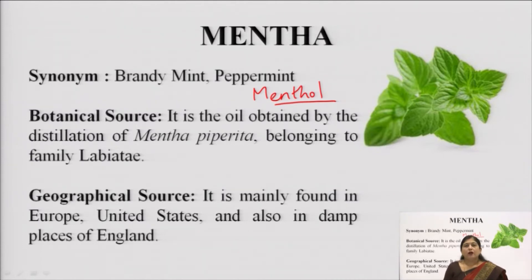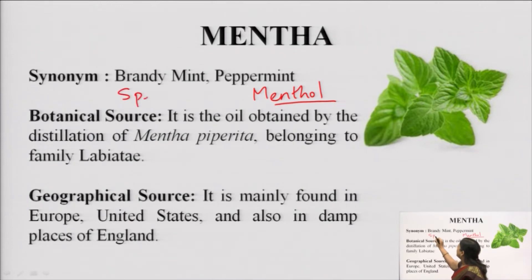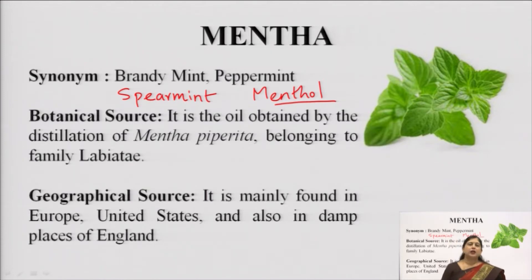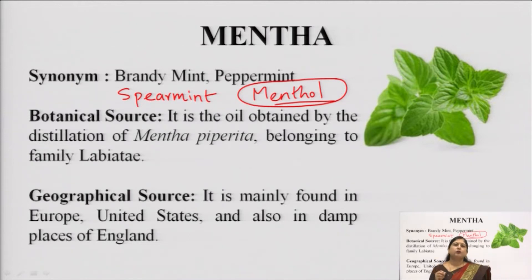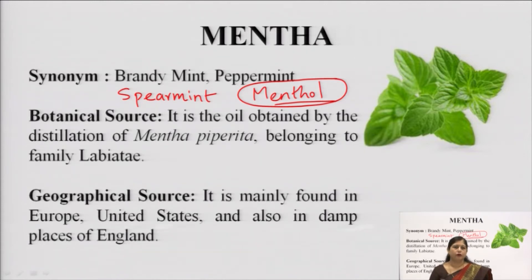In India we have a different variety of mentha which is commonly known as spearmint. In common language we call it pudina — that is spearmint. But it is very different from peppermint in that it does not contain menthol. So we should not get confused with the mentha used for menthol production and the spearmint or pudina which we consume in food.